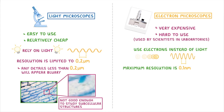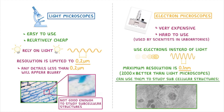So if we compare the 0.2 micrometers of light microscopes to the 0.1 nanometers of electron microscopes — and notice here that the units have changed — electron microscopes actually have 2000 times better resolution than light microscopes. This means that electron microscopes can give you images with much higher magnifications without going blurry, and so you can use them to study sub-cellular structures, like mitochondria.